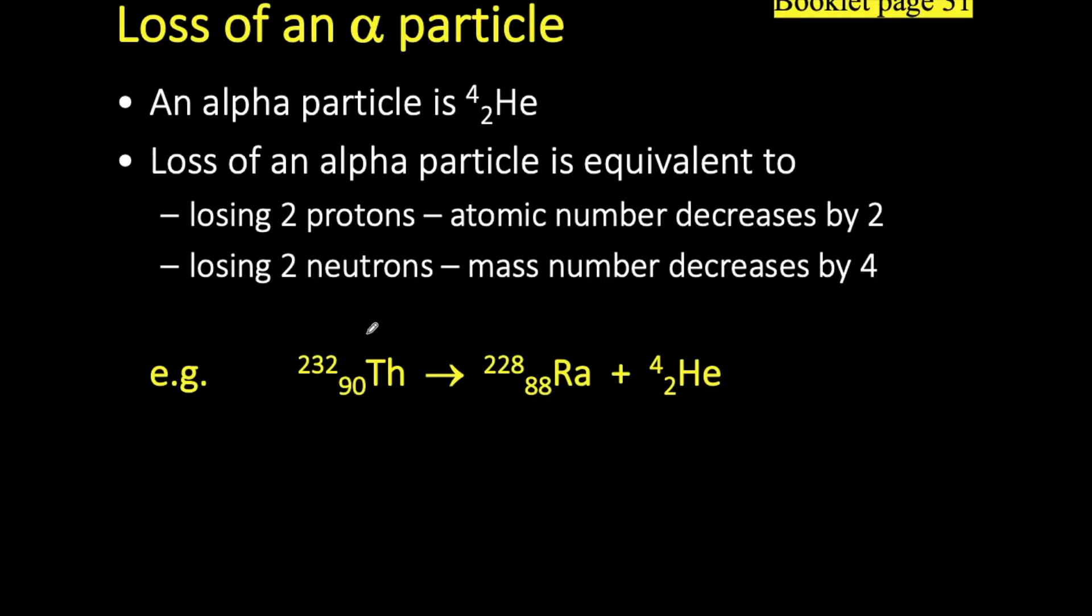Now on our left hand side we have a total mass number of 232. And in all nuclear equations, the mass number on the left will be equal to the total mass on the right. So if we double check that 228 plus 4 will give us 232.